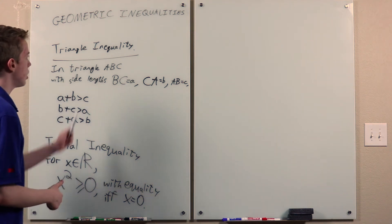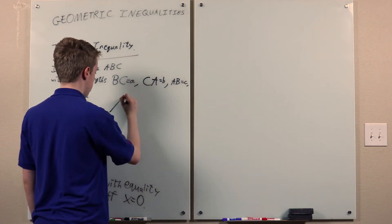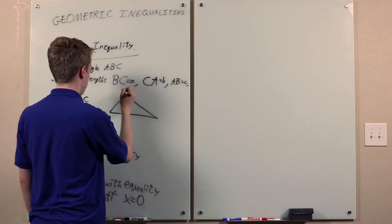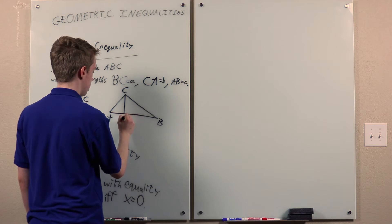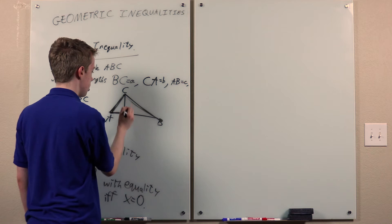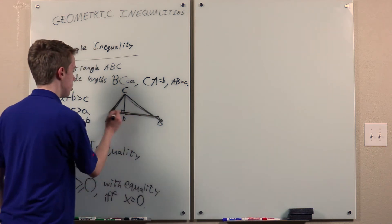The triangle inequality, I guess I should prove it. So basically, what we can do is say, and then drop a perpendicular. So then AC is greater than AD, and CB is greater than DB, by the Pythagorean theorem. And then the sum of these is AB.